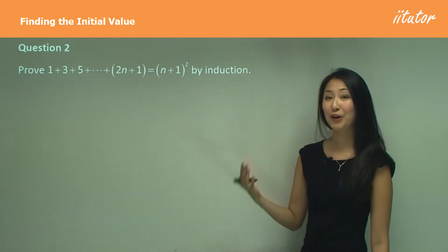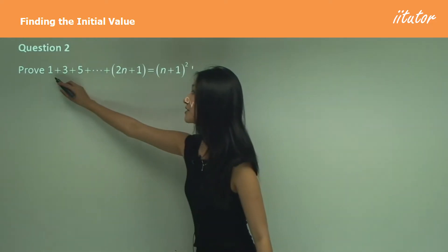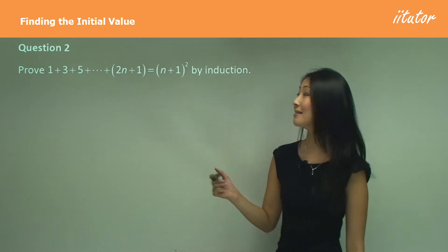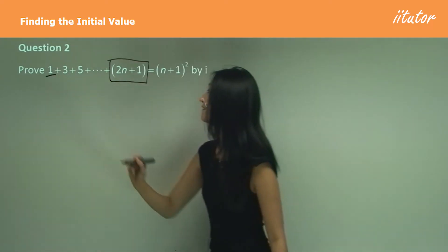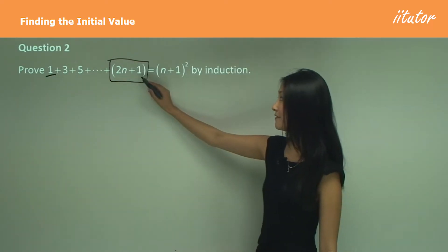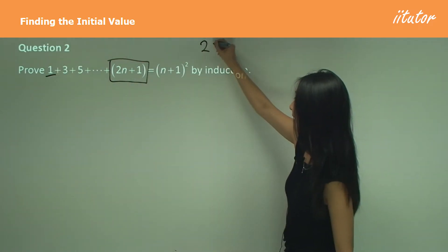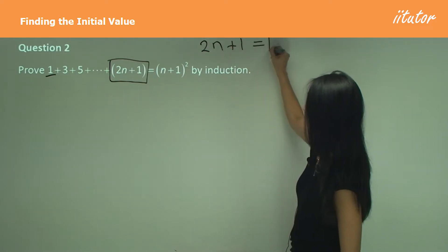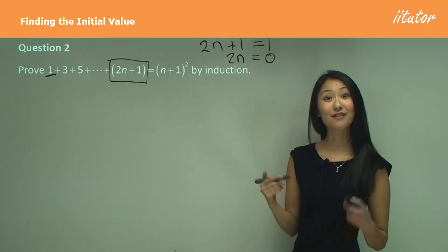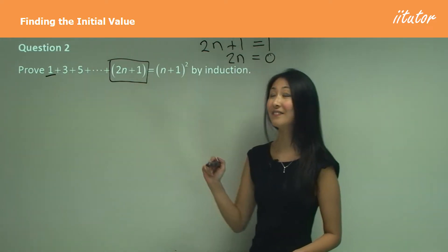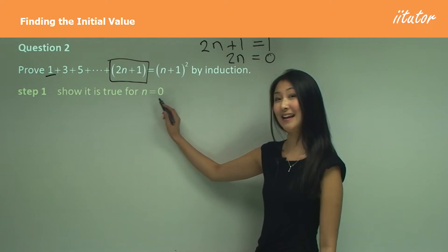What we want to work out is: what is the initial value of n to get the first term? We do that by considering the general equation and the first term. We want to work out what n has to equal for 2n plus 1 to equal 1. So: 2n plus 1 equals 1, 2n equals 0, therefore n must equal 0 for the first term to equal 1.